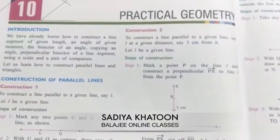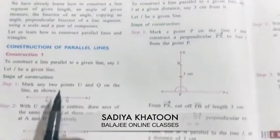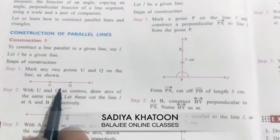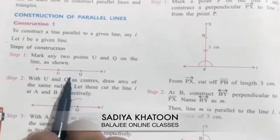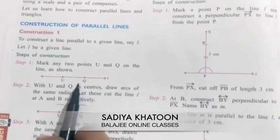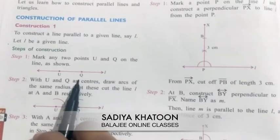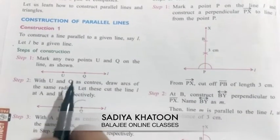Let's get started with the first construction. We have to construct different types of triangles and also construct parallel lines. So the first kind of construction is one in which a line is given to you and you have to draw a parallel line to this line.